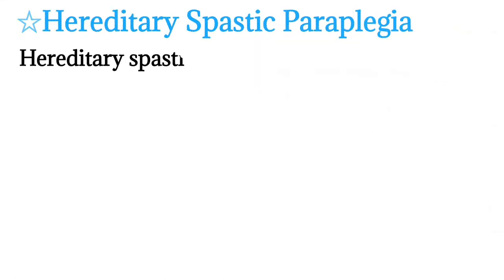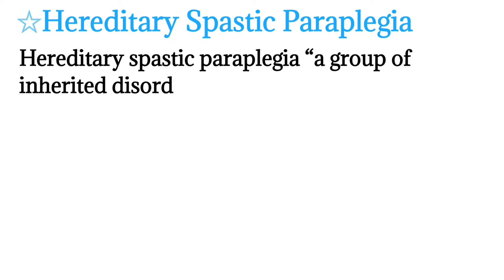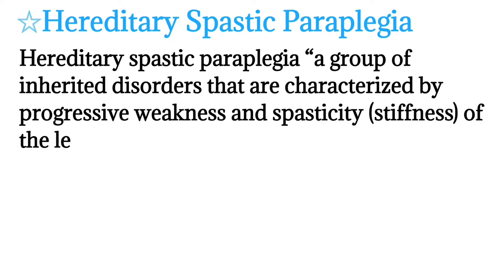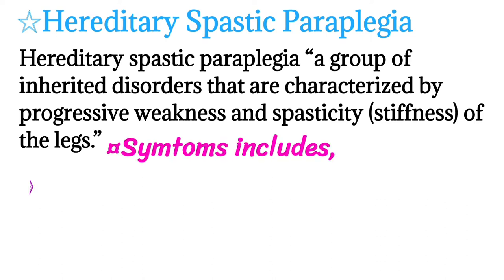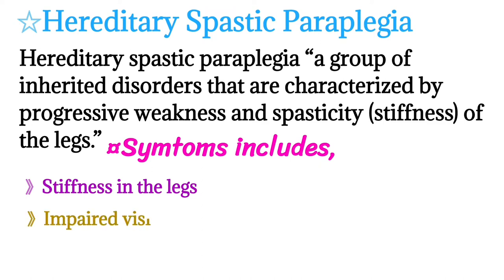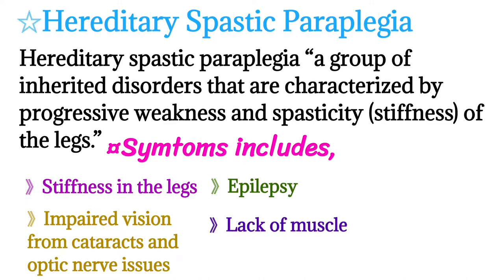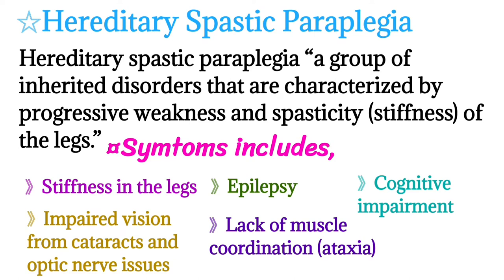Hereditary spastic paraplegia is a group of inherited disorders characterized by progressive weakness and stiffness of the legs. Symptoms include stiffness in the legs, impaired vision from cataracts and optic nerve issues, epilepsy, lack of muscle coordination (ataxia), and cognitive impairment.